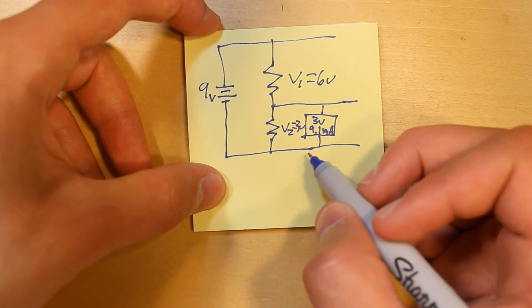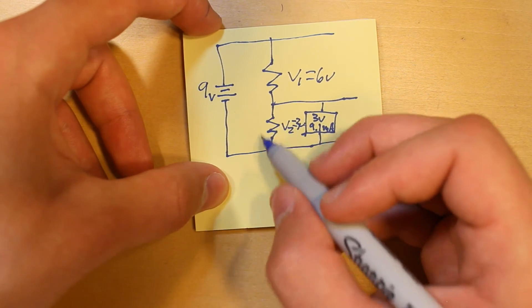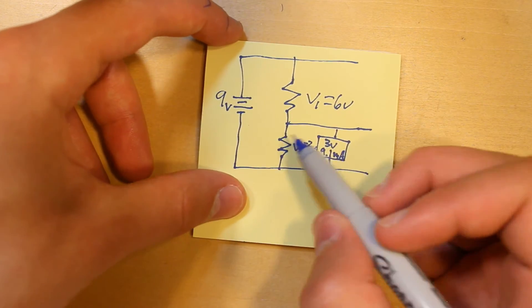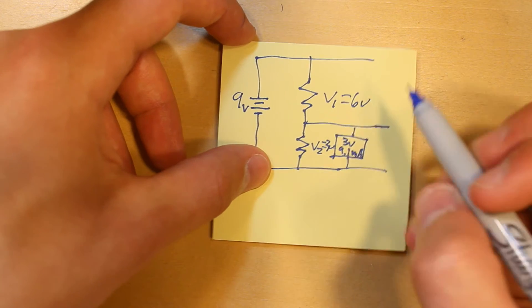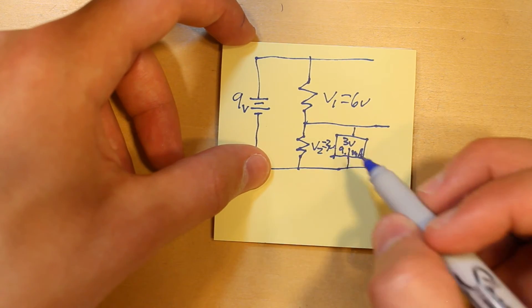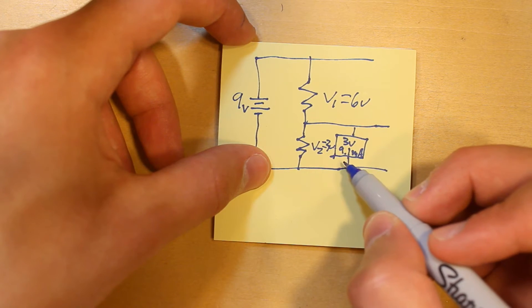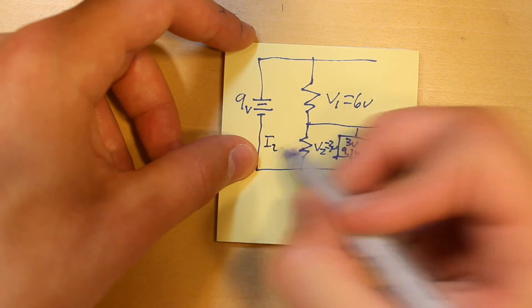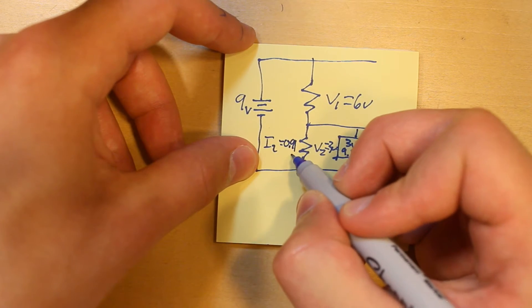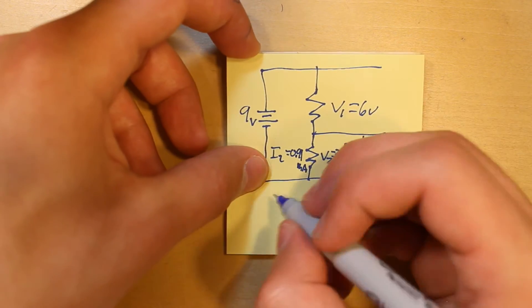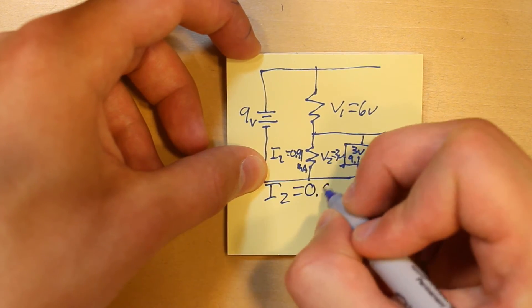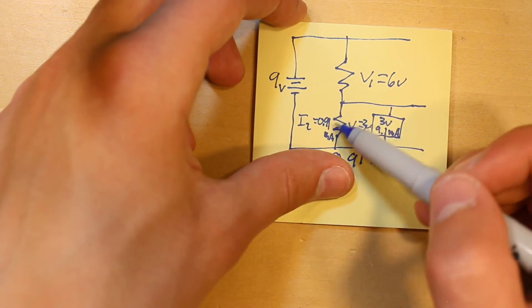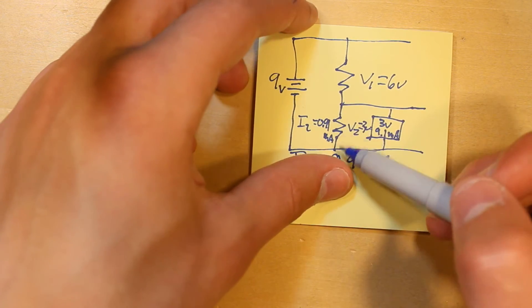And here's something called the 10% rule, which says that this resistor should let through 10% of the load current, so I2 should be 10% of the load current. So, I2 is 10% of 9.1 milliamps, so I2 equals 0.91 milliamps. And the reason that we use the 10% rule is to waste less current just draining into ground.